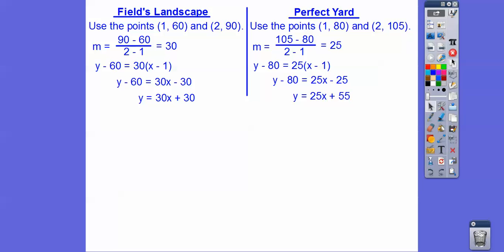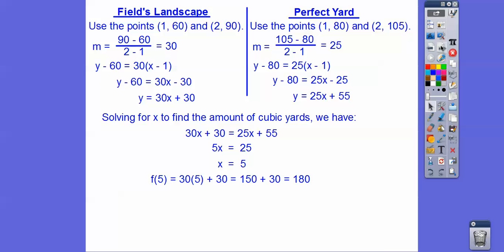Now we've got to set them equal to each other. So we want to know when are they going to be equal prices. So when we set those equal at x equals 5. So 5 cubic yards. And the price is going to be $180. So I just plugged in 5 back up right here. So 30 times 5 is 150 plus 30 is 180. You can plug in 5 right there. 25 times 5 is 125. 125 plus 55 is also 180. Well, that's when they're going to be equal to each other. So both companies will charge $180 for 5 cubic yards of mulch.